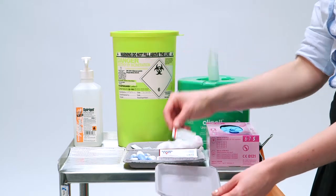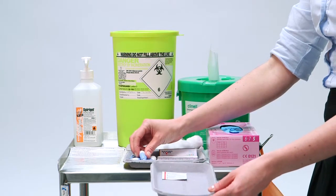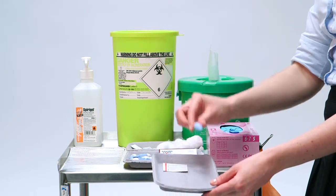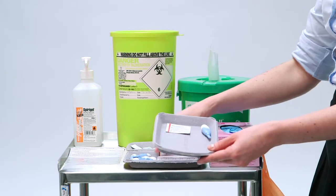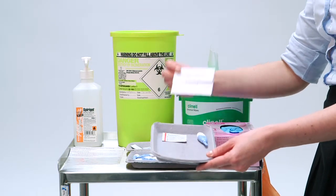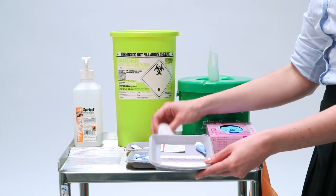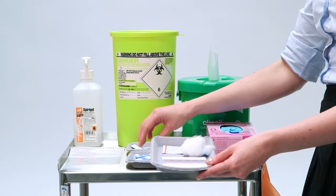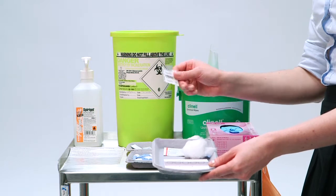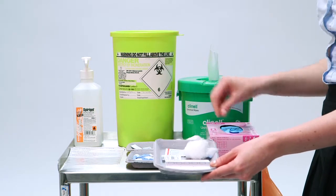a Sturette wipe, a lancet, the dry blood spot collecting card, cotton wool, a towel, a plaster, and some gloves.